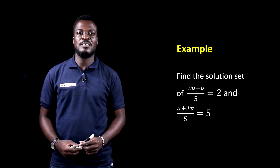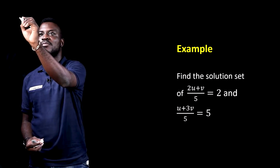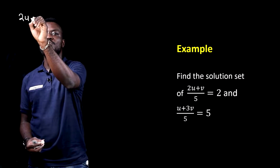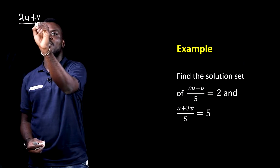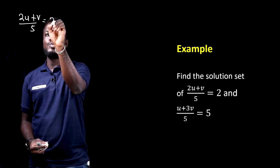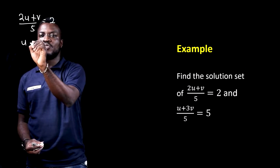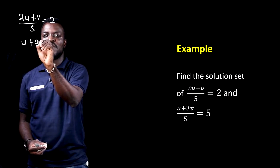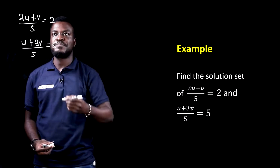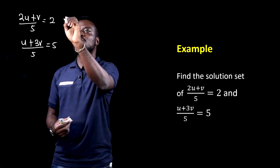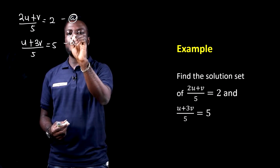Now, let's try this example. We need to find the solution set of (2u + v) / 5 = 2, which we'll call equation A, and (u + 3v) / 5 = 5, which we'll call equation B.